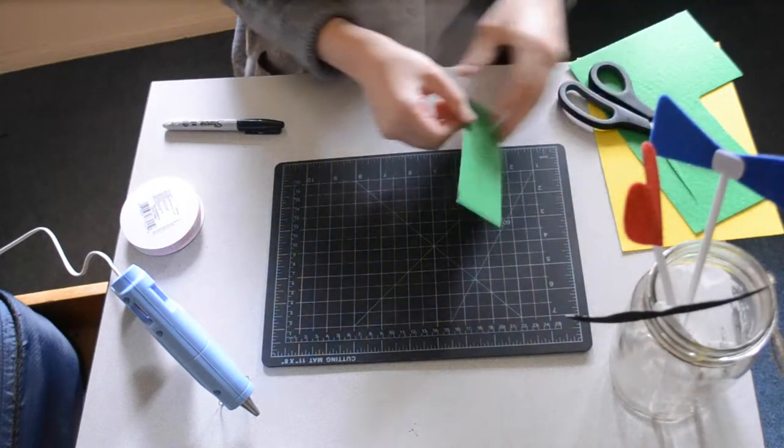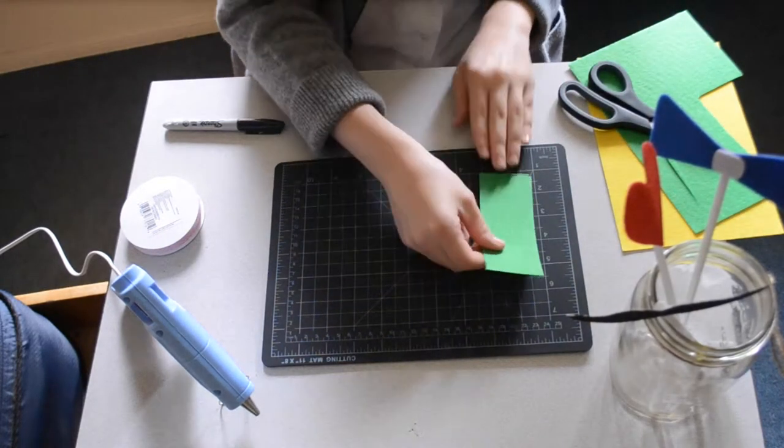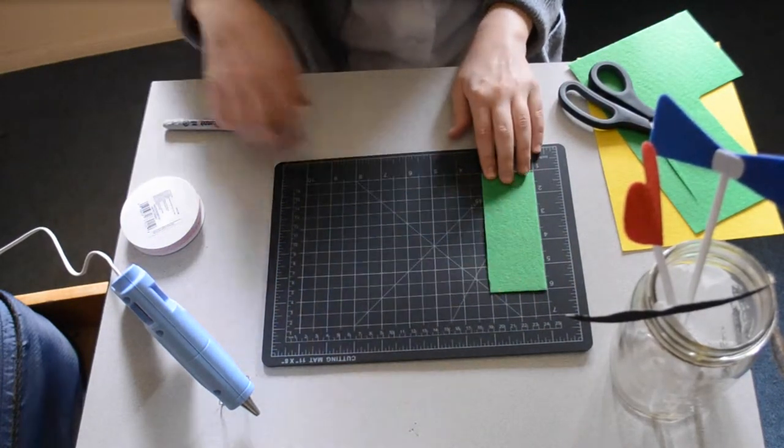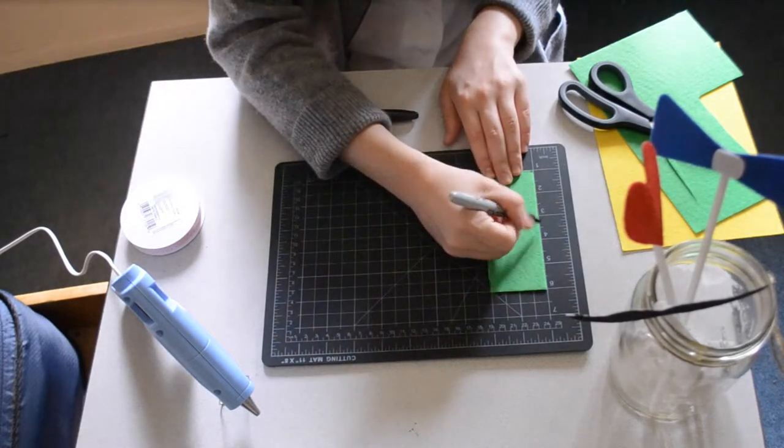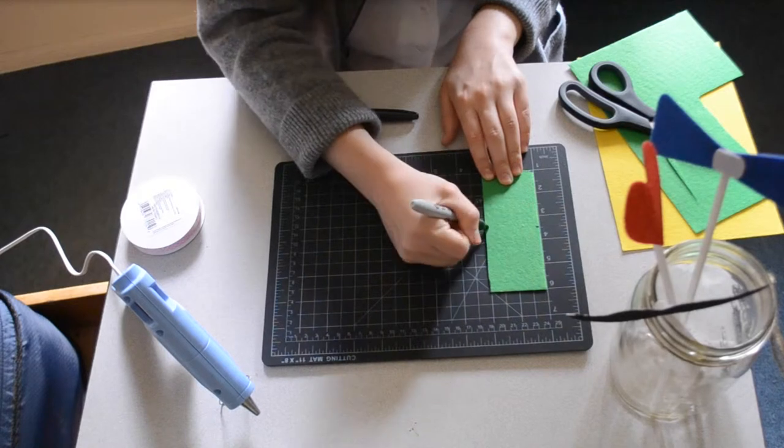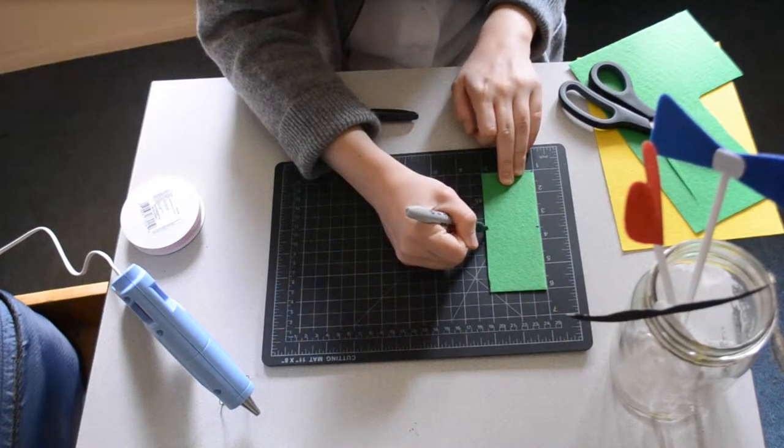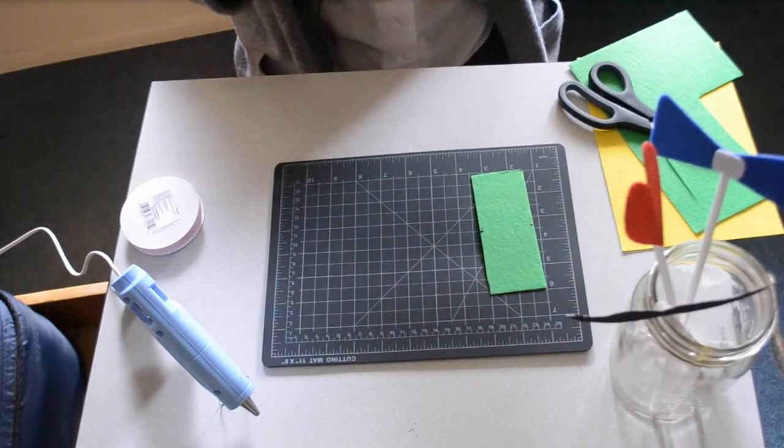So now what I want to do is mark the halfway point on this piece of felt. I'm going to lay that on the grid, go up 2½ inches, and draw a little mark on either side. That's going to be the center of the bow tie.